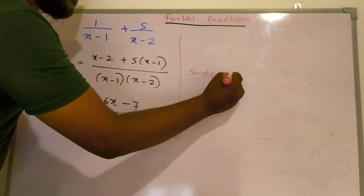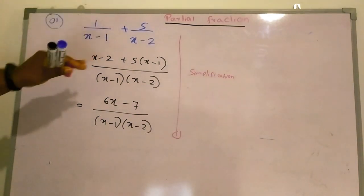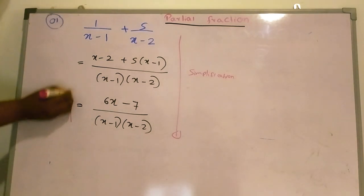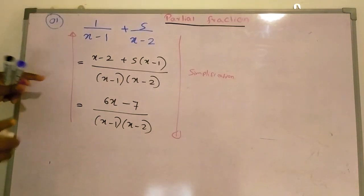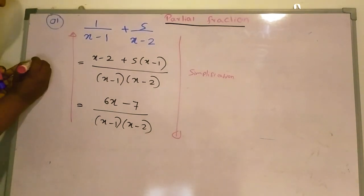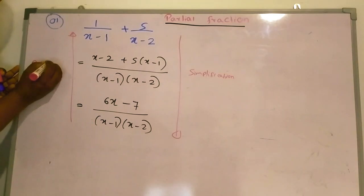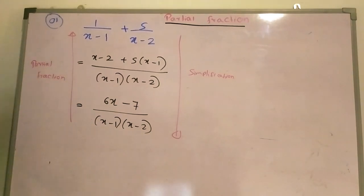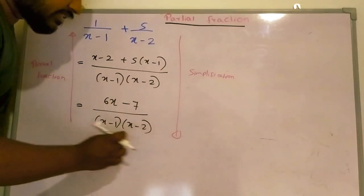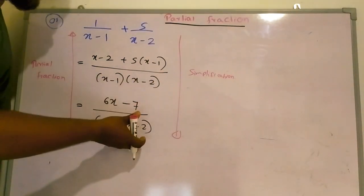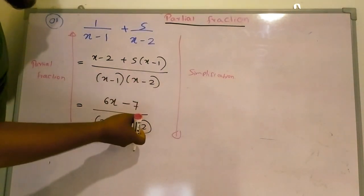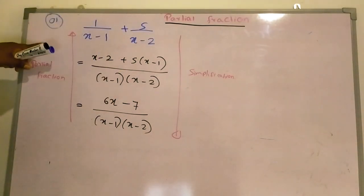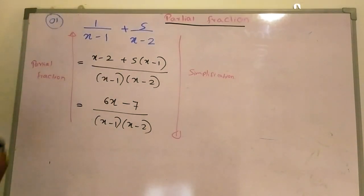In most cases, we have this kind of result to simplify. According to that way, we call this a partial fraction. We will have this kind of result, and we are going to find the main fraction. So this is known as partial fraction.